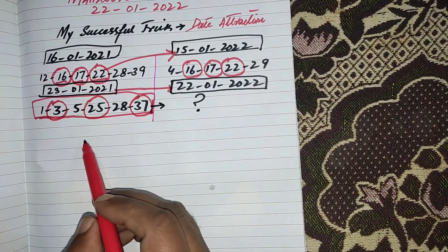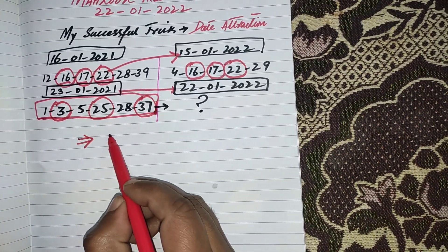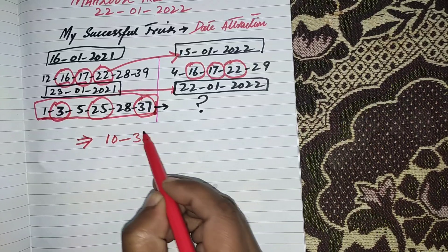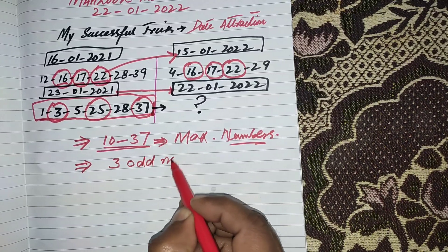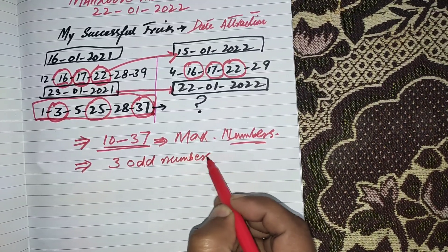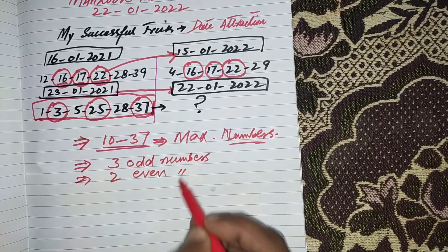Now most important point: you should select your maximum numbers from 10 to 37. You should select 3 odd numbers and 2 even numbers.